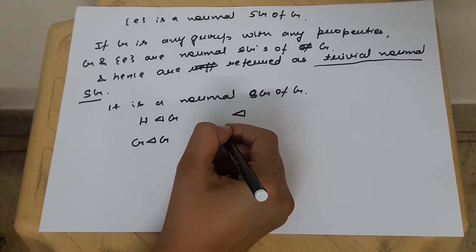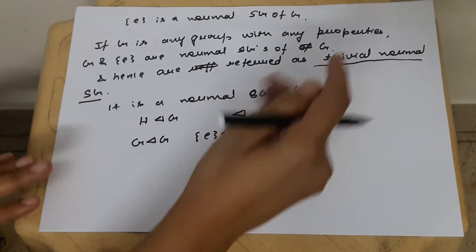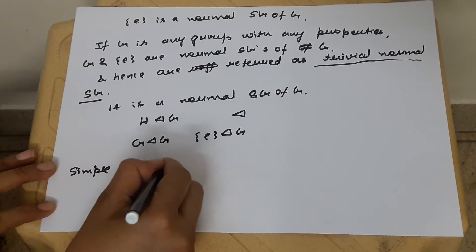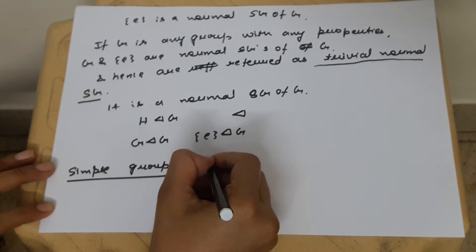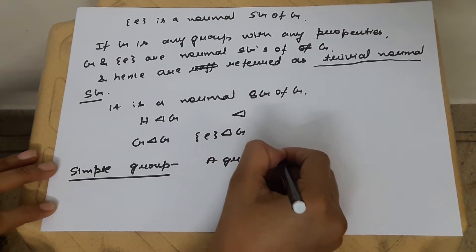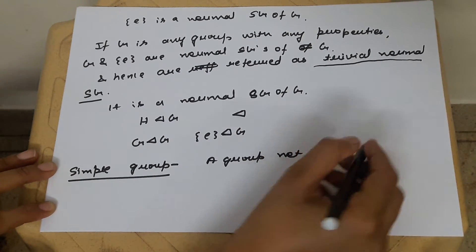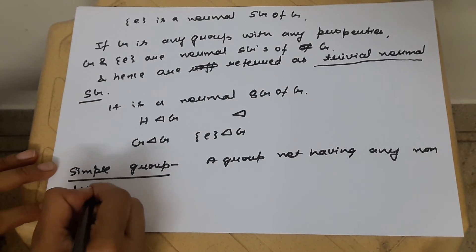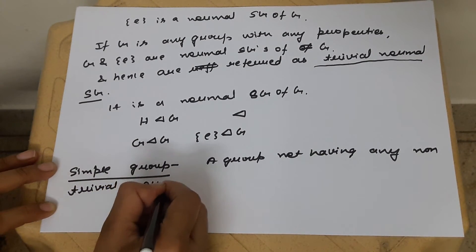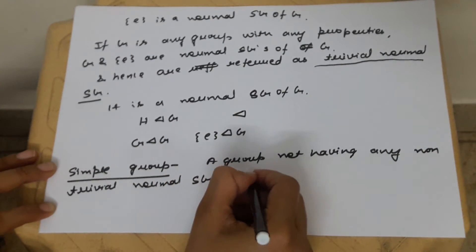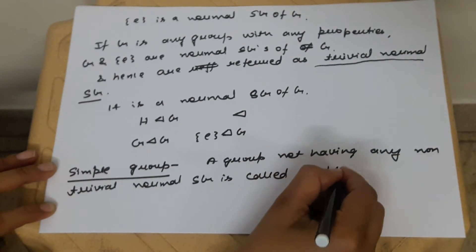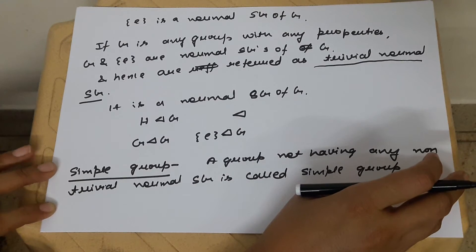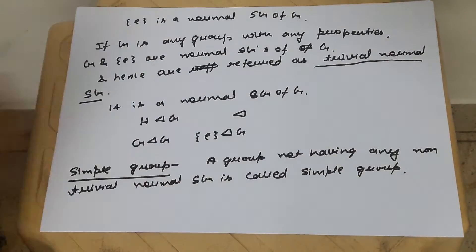There is another very important definition based on trivial normal subgroups, and that is called a simple group. Trivial subgroups will always exist for all groups, but a group not having any non-trivial normal subgroup is called a simple group.